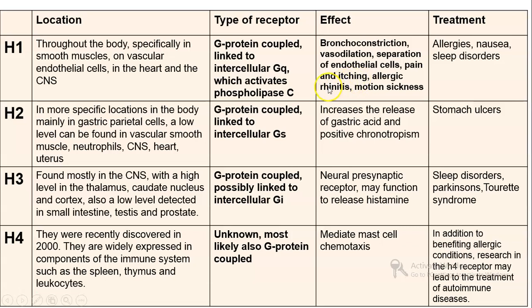The effects of H1 receptors include bronchoconstriction, vasodilation, separation of endothelial cells, pain and itching, allergic rhinitis, and motion sickness. H1 receptor antagonists are used for the treatment of allergies, nausea, and sleep disorders.